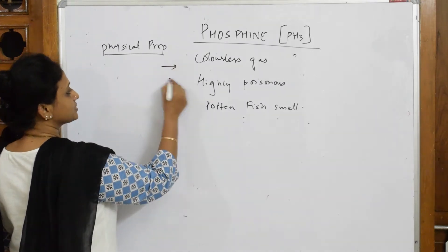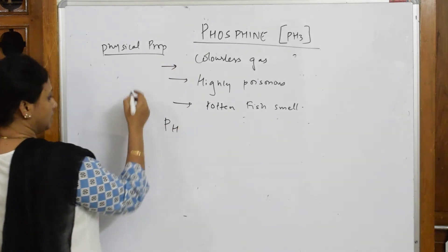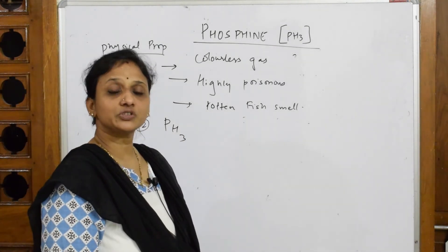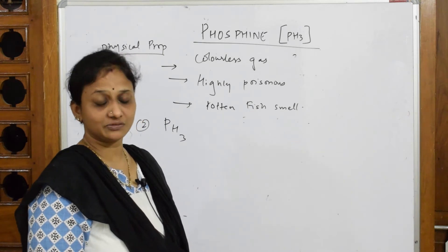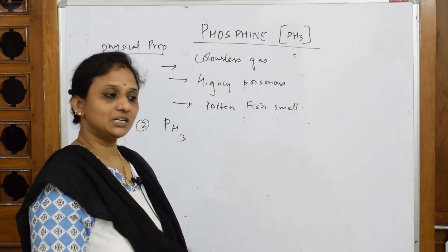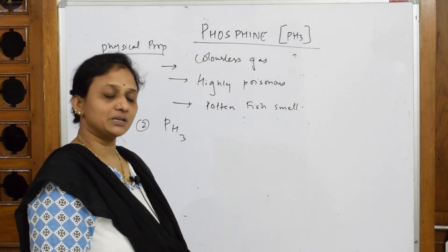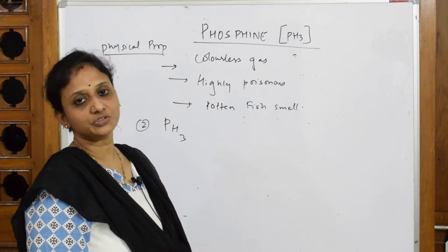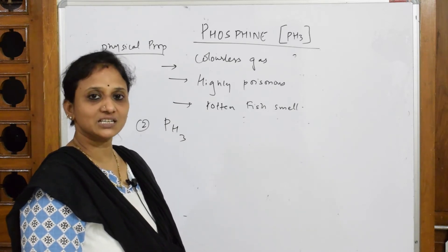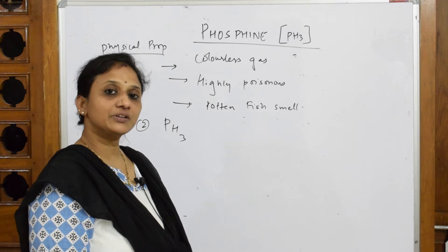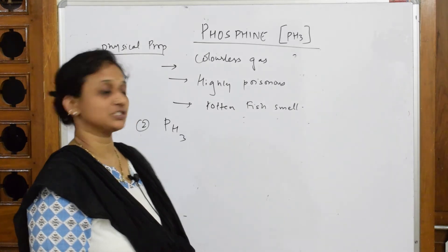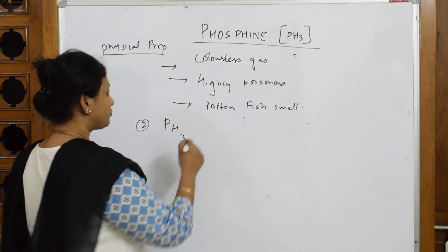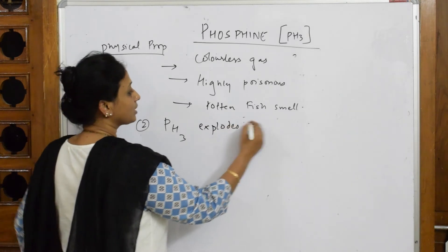Now for the chemical properties: if phosphine is present in even trace amounts and reacted with nitric acid, which is a strong oxidizing agent, it will explode. So remember this question — what happens when phosphine is treated with concentrated nitric acid? The reaction is highly explosive in nature.